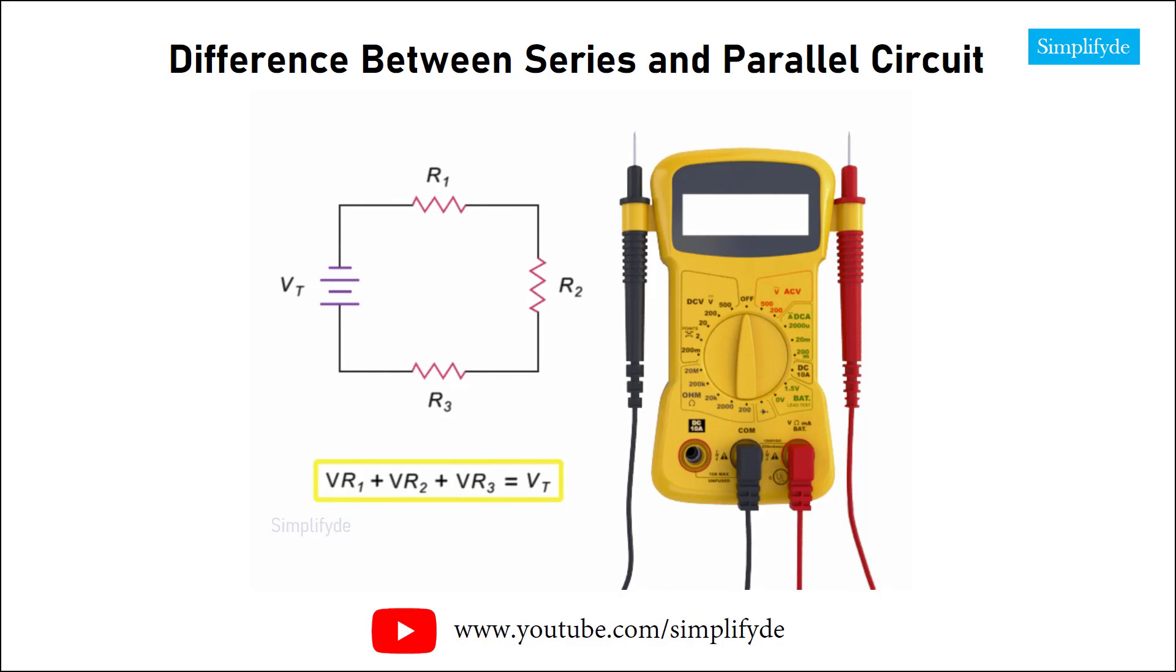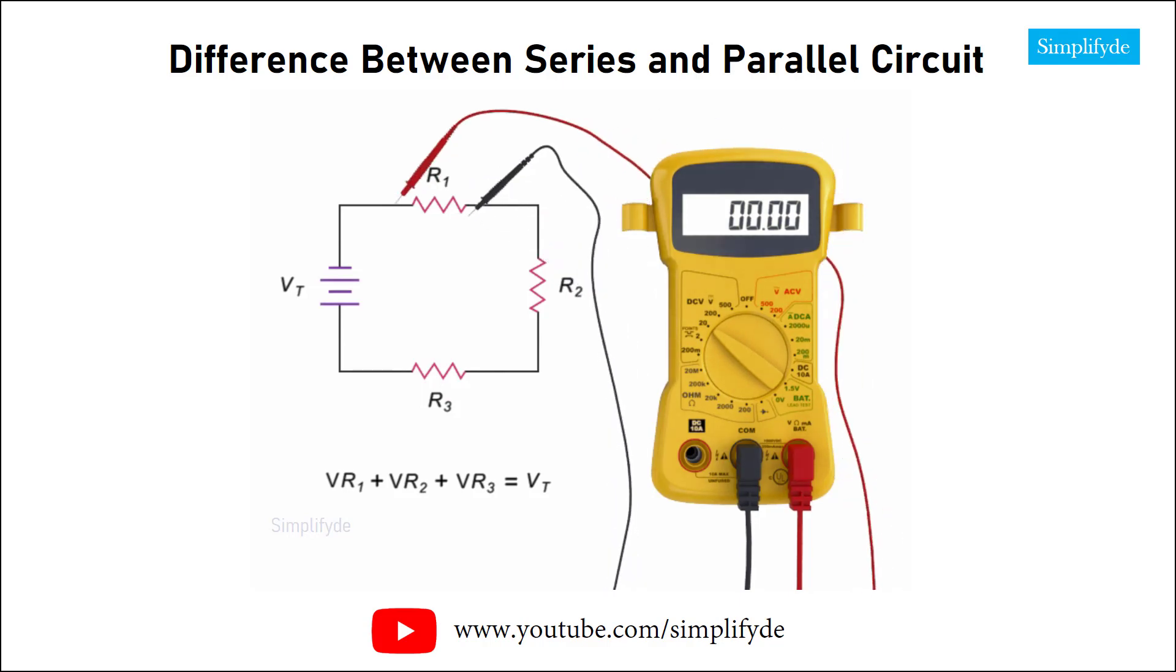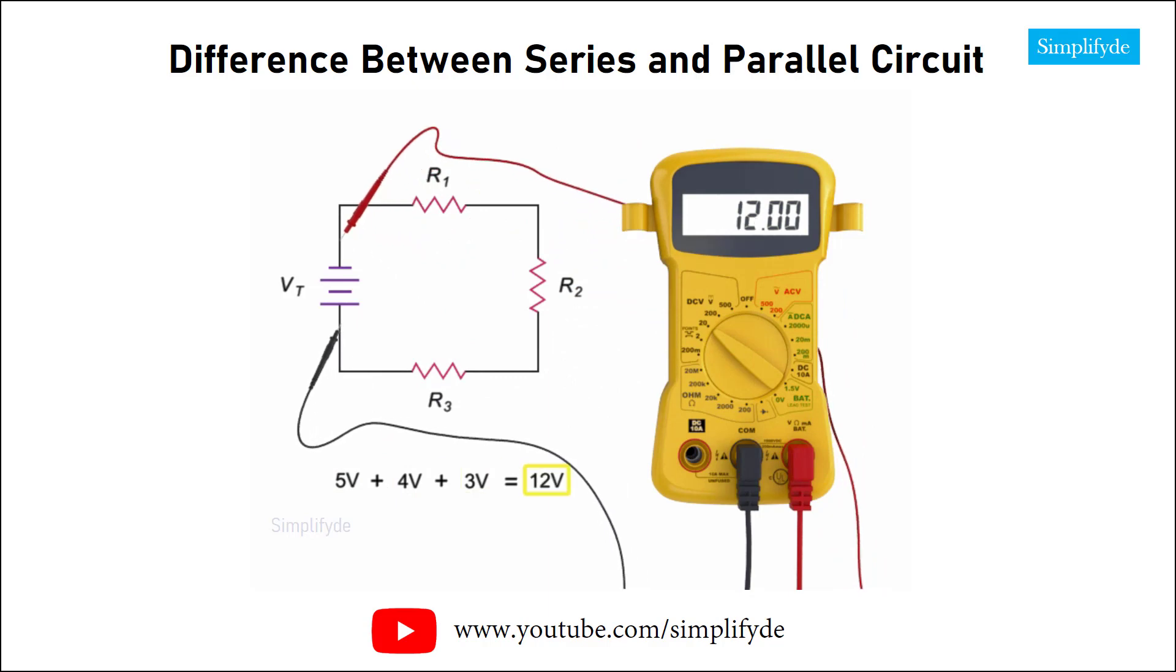By adding the voltage drop across resistors 1, 2, and 3, you can determine the total voltage applied at the source. In this case, the total voltage is 5 volts plus 4 volts plus 3 volts, or 12 volts total voltage.